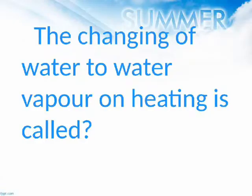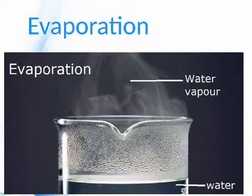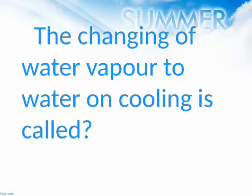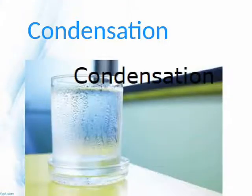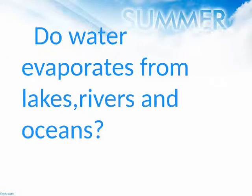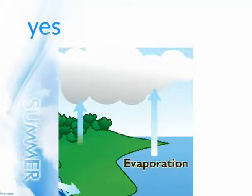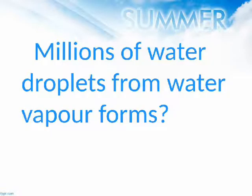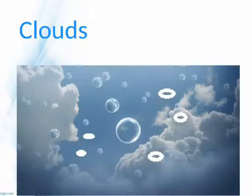The changing of water to water vapor on heating is called? Evaporation. The changing of water vapor to water on cooling is called? Condensation. Do water evaporates from lakes, rivers, and oceans? Yes. Millions of water droplets from water vapor form? Clouds.